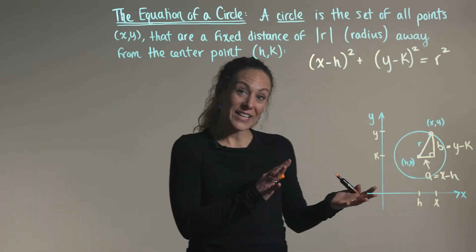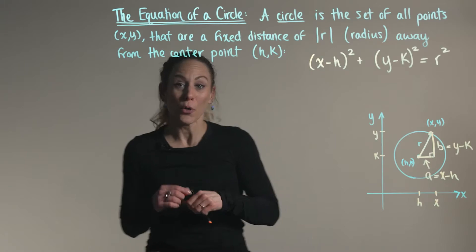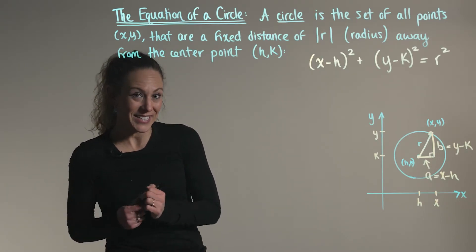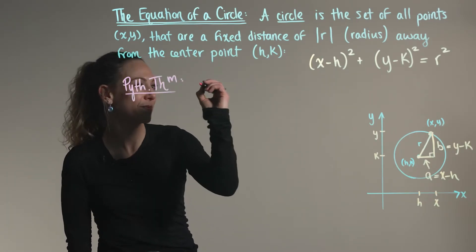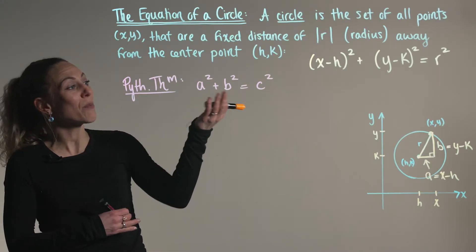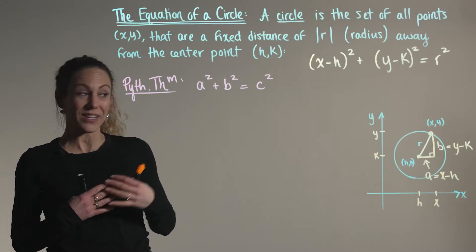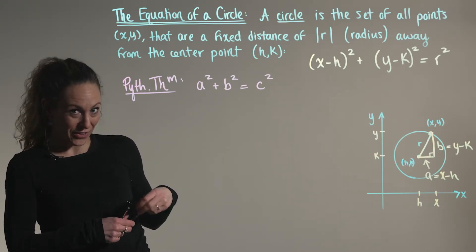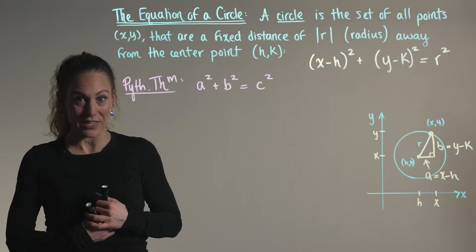So now that we have the lengths of the sides of our right triangle, we can recall Pythagorean's identity. Recall that Pythagorean's identity says that the sum of the two squares of the shorter sides is equal to the square of the longer side, or a² + b² = c².